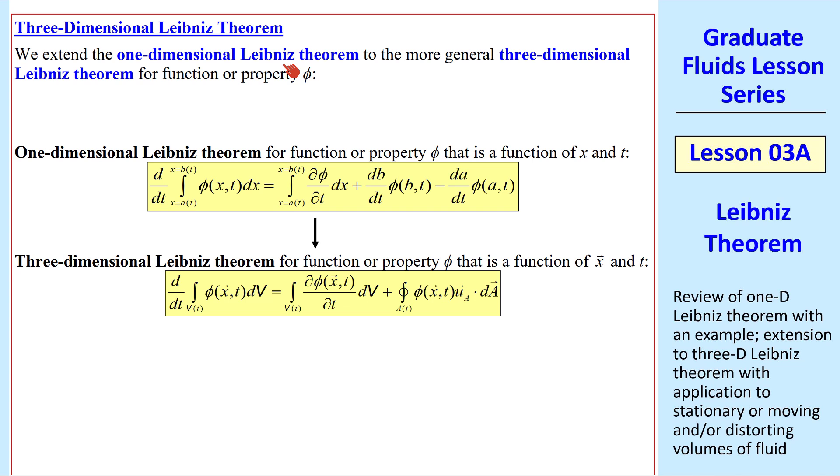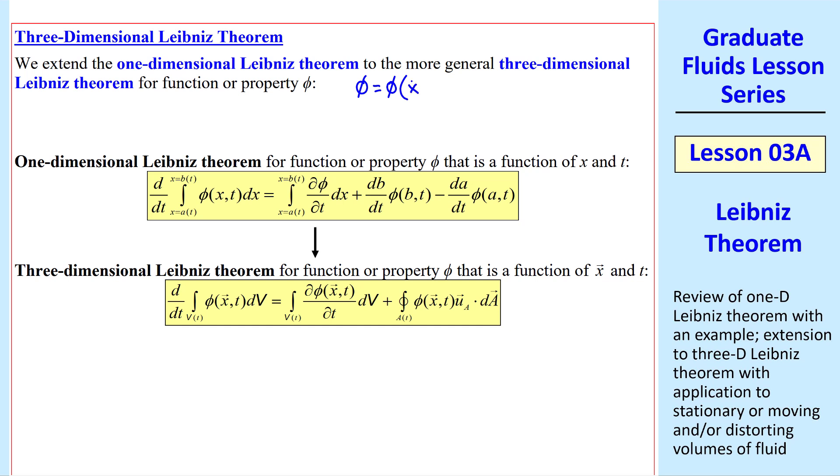Now let's extend the 1D Leibniz theorem to three dimensions. Again, for some function or property phi, where phi, in general, is a function of both spatial vector x and time. And by the way, both of these apply at any instant in time. Here's the 1D form of the Leibniz equation. We extend it to 3D by changing the limits from just a and b to some volume. So this is now a volume integral instead of just an integral with respect to x.